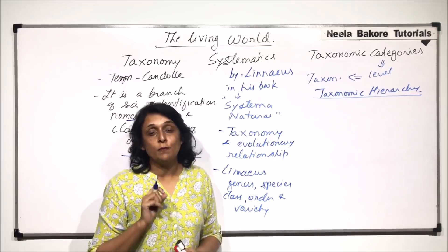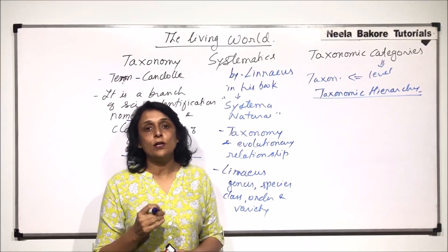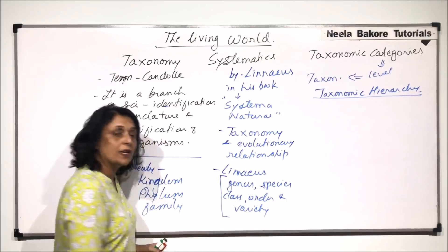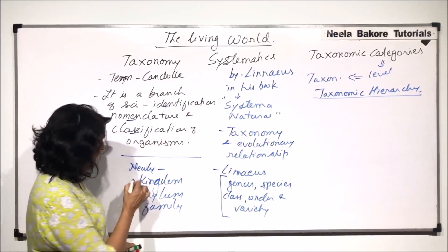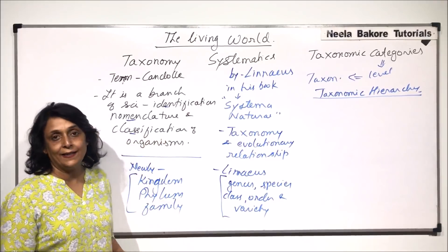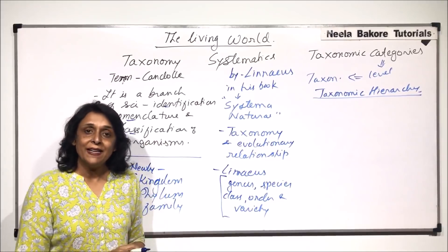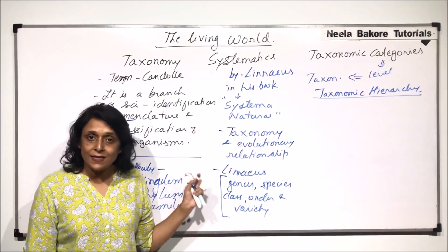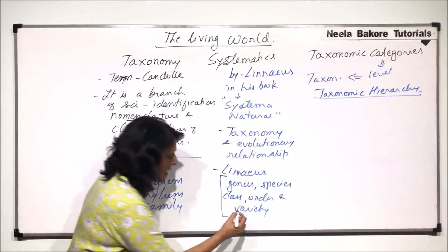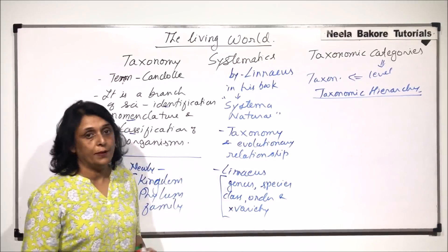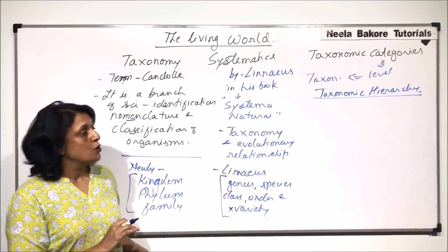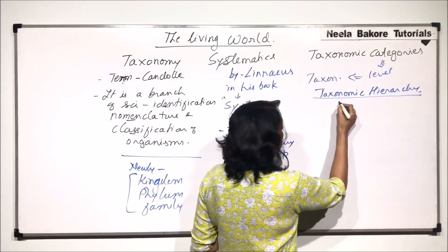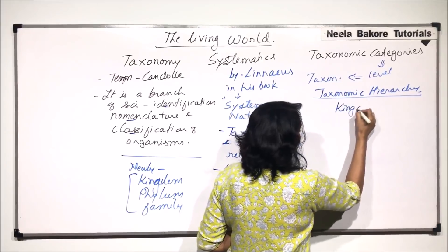There were the categories given by Linnaeus, and there were the newly added categories. After combining them in the systematic hierarchy, variety was dropped — it was not included. When we arrange them, the topmost or biggest group is the kingdom.